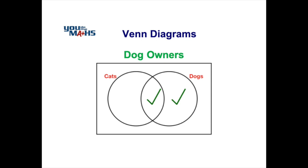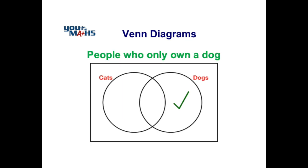You can see here that we've ticked two parts of the Venn diagram. These represent people that own dogs — basically everybody inside the dog circle. We don't care about the cats at this point, but the ticks indicate dog owners because they're inside the dog circle. A tick just inside one part of the dog circle represents people that only own a dog.